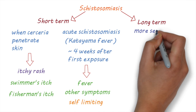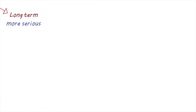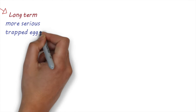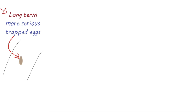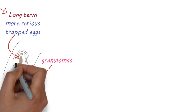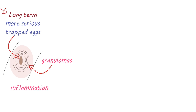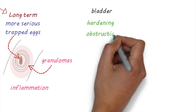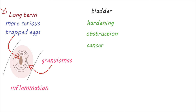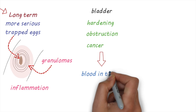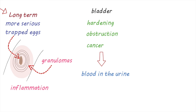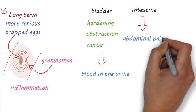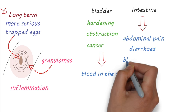The long-term effects of schistosomiasis are more serious and occur as a result of the eggs that are trapped in various organs. The trapped eggs can lead to changes in tissues characterized by the formation of granulomas with a lot of inflammation around them. In the bladder, this can lead to hardening of the bladder wall, obstruction, and can even result in a type of bladder cancer, presenting with symptoms such as blood in the urine. Intestinal schistosomiasis can lead to symptoms such as abdominal pain, diarrhea, and blood in the stool.